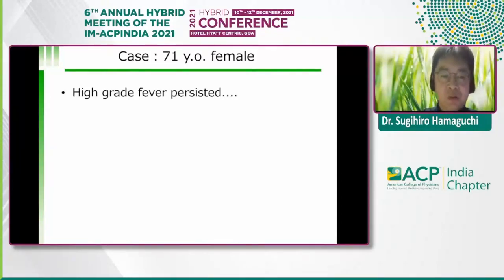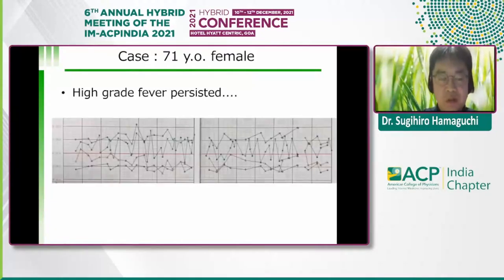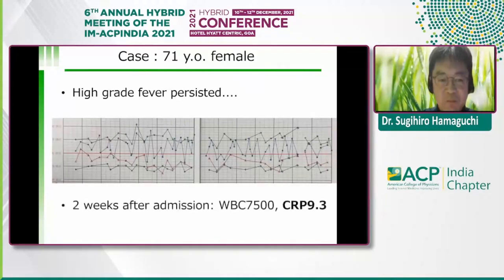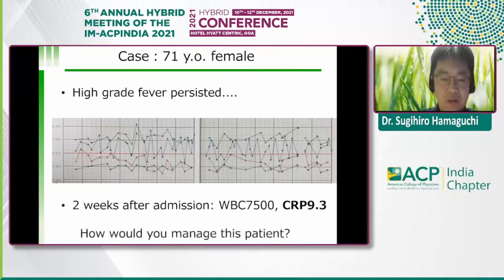Heparin followed by warfarin were administered. However, high-grade fever persisted — this blue line shows the body temperature with spiking fever. Two weeks after admission, the patient still had high CRP. How would you manage this patient?